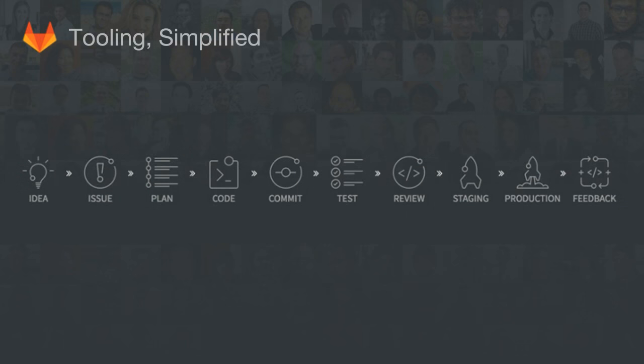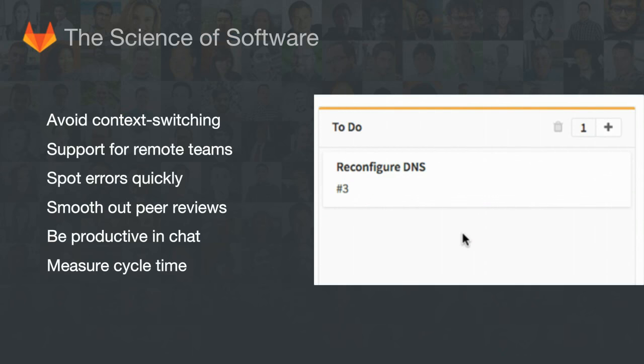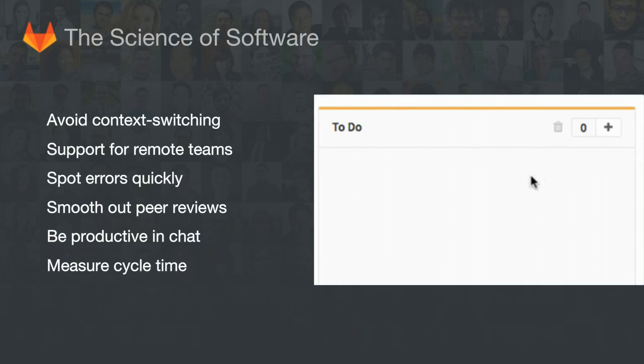GitLab is the integrated platform for the full software development lifecycle. It's built on top of Git, the leading version control system. Git allows developers to store a local copy of their source code, propose changes to it, and share those changes with others. We help you create great software by strengthening and integrating your source code management, code review, testing tools, and deployment process in one platform. A unified experience across the development lifecycle helps increase developer productivity by reducing the number of times your developers have to switch from one platform to the next, ensuring everyone on your team is more productive and more collaborative.